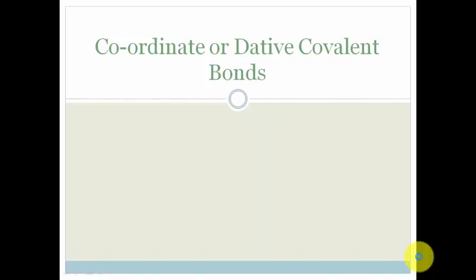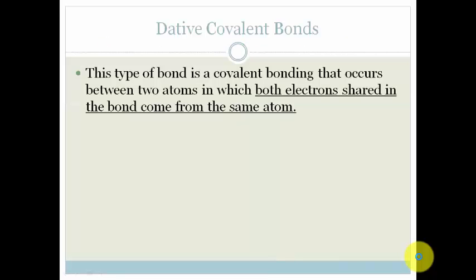But what is this? The definition states that this is a type of bond, it's covalent bonding, but what's special is that both electrons that are shared in the bond come from the same atom. So instead of having one electron from each atom, we now have both electrons shared in the bond come from the same atom.